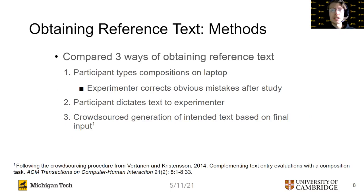In these two studies, we also compared three different ways of obtaining the participants' reference text. In study one, we asked participants to type their compositions on a laptop after they finished entering each one on our interface, and we corrected obvious typographical mistakes in the reference texts after the study. In study two, we asked participants to dictate their intended text to the experimenter once they finished typing it on our interface, clarifying any difficult-to-spell words. For both of these studies, we also used crowdsourcing to try to generate participants' intended text from their final inputs. Our crowdsourcing procedure was based on previous work from two of our authors, and more details can be found in the original paper.